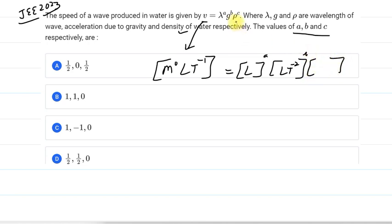And then again next thing is density, mass upon volume. So it is written as ML^-3 raised to power C. So now we compare the coefficients of like length with length and mass with mass and time with time.